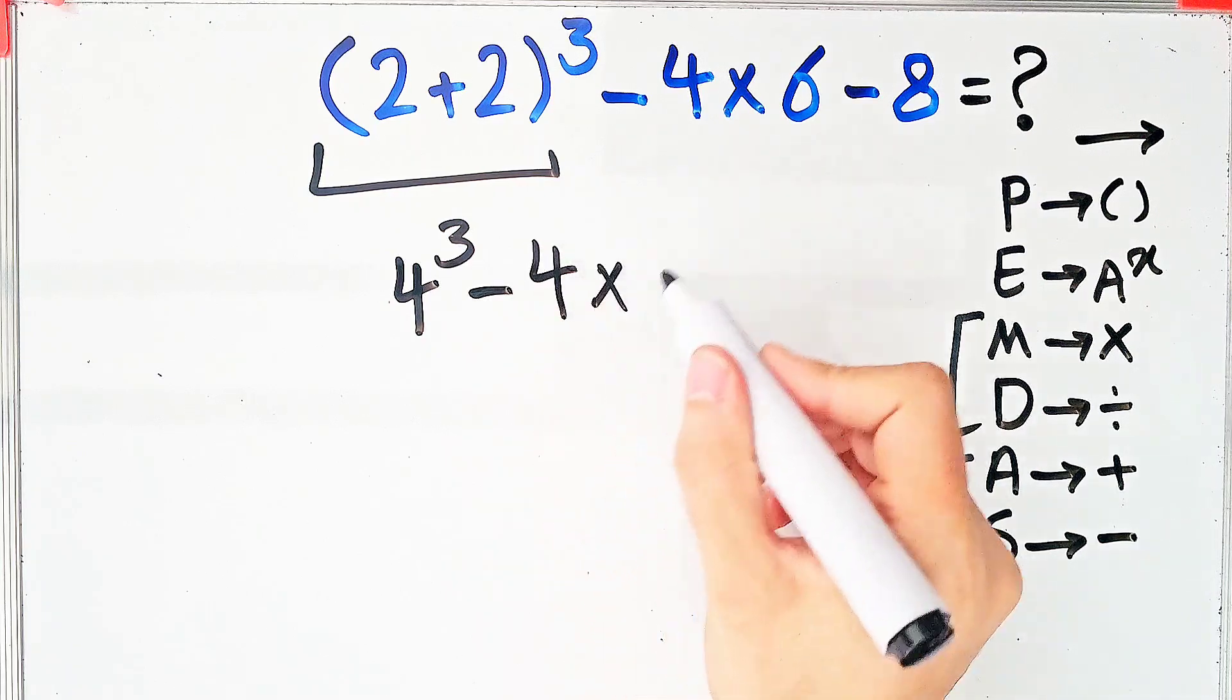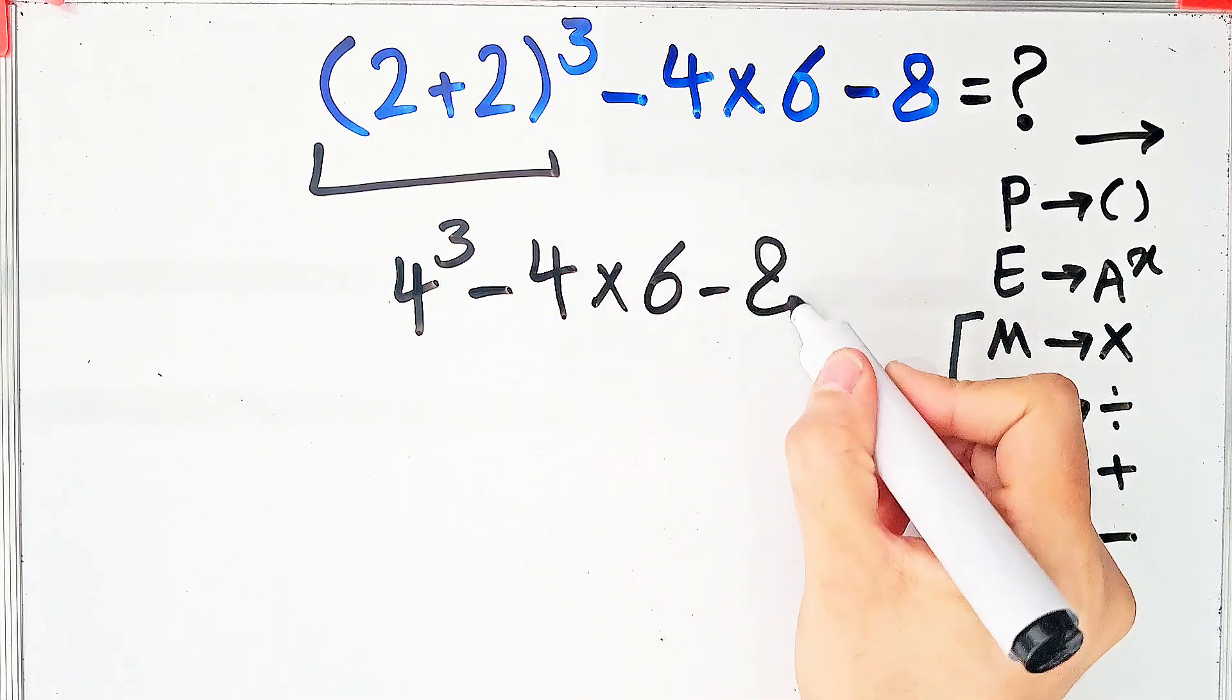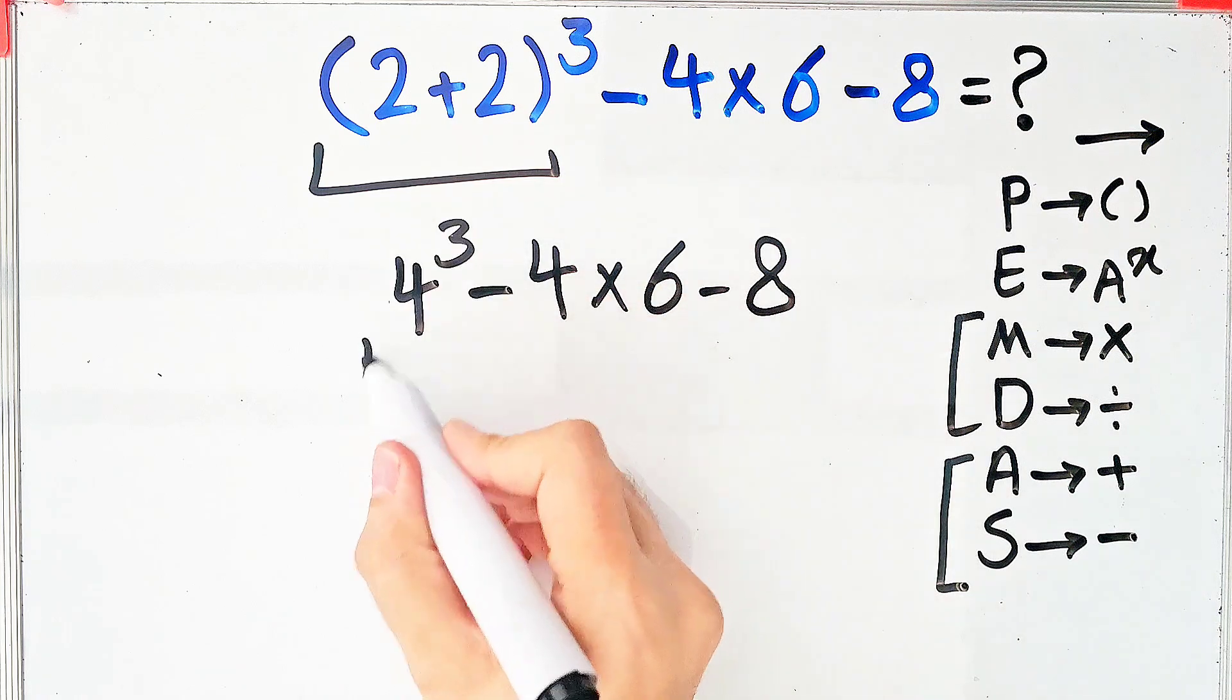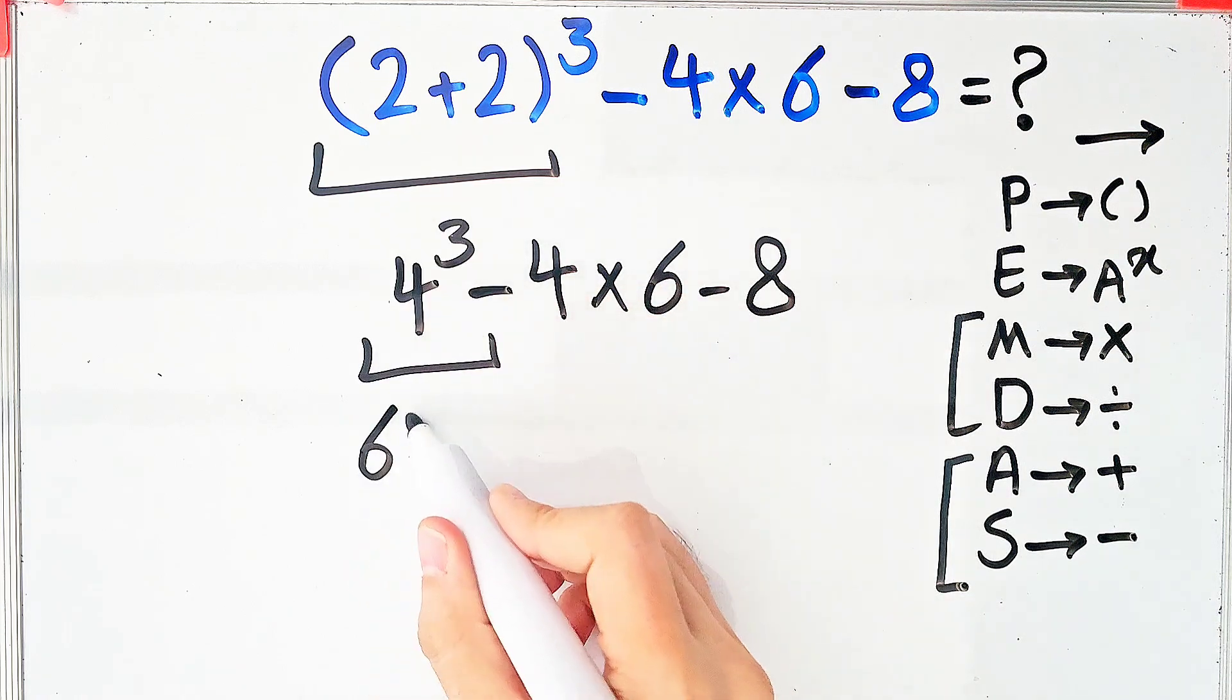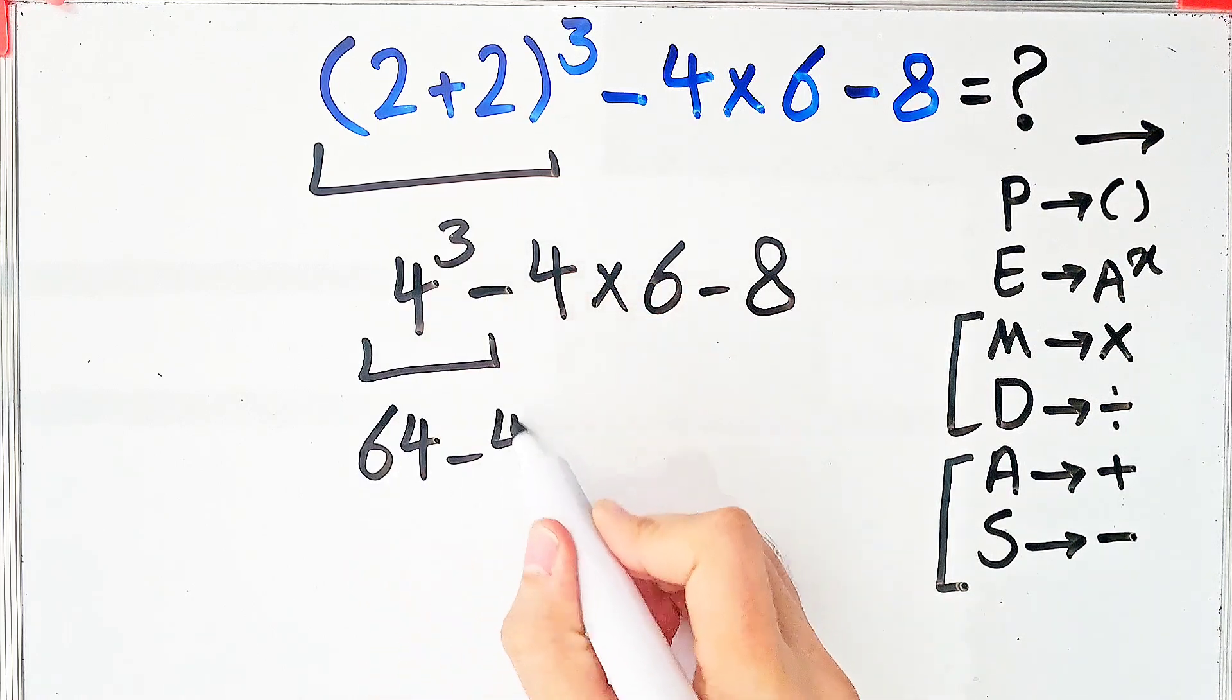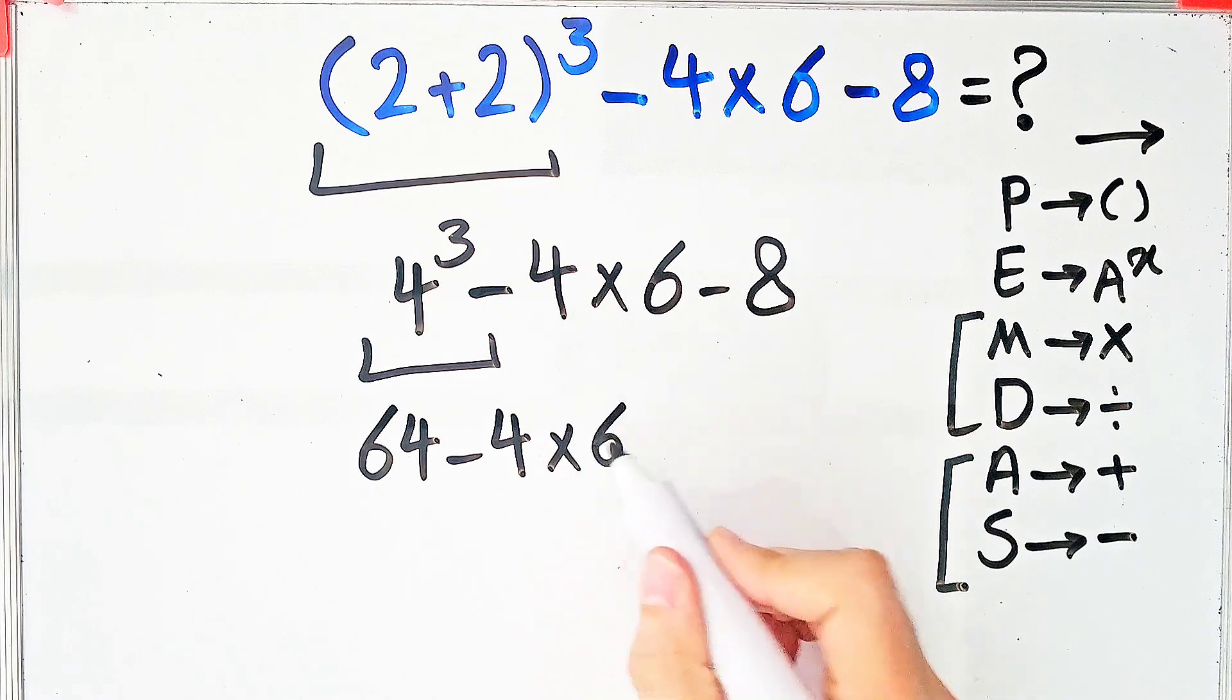In this step, we simplify the exponent. 4 to the power of 3 equals 64. 64 minus 4 times 6 minus 8.